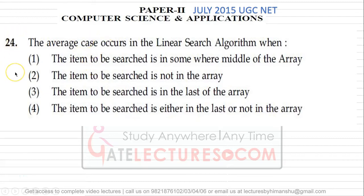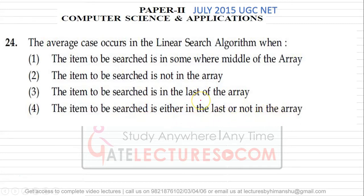Question number 24 says: the average case occurs in the linear search algorithm when — first, the item to be searched is somewhere in the middle of the array; second, the item to be searched is not in the array; third, the item to be searched is in the last of the array; and fourth, the item to be searched is either in the last or not in the array. We need to find out the average case of the linear search algorithm.